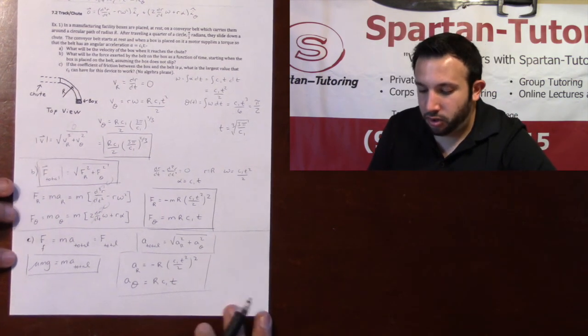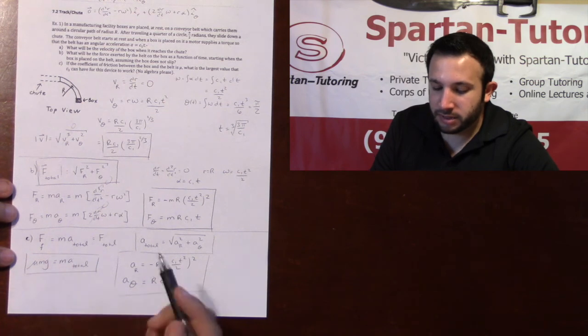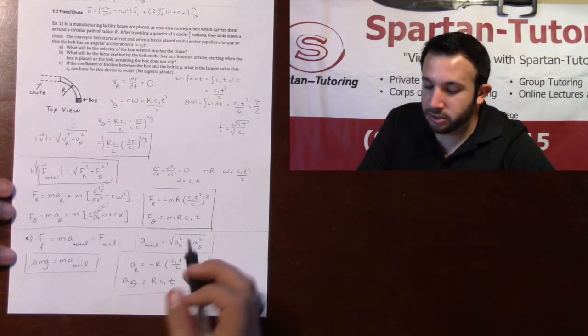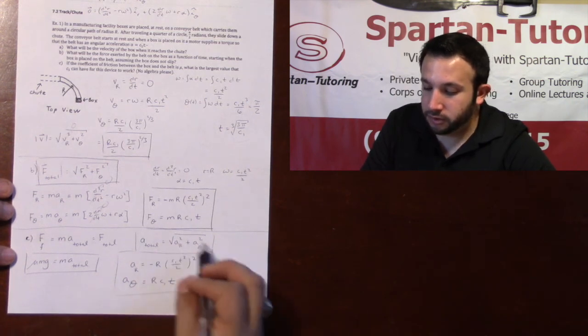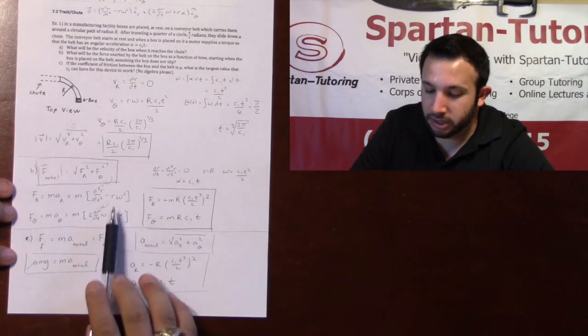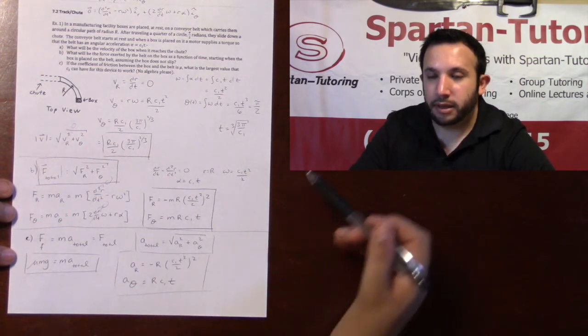In this situation, all you need to state is that your force of friction equals m times a total. If I wanted to, I could have canceled out those m's. A total is the magnitude of your total acceleration, so ar squared plus aθ squared. And fortunately, in part b, we already found ar and aθ.